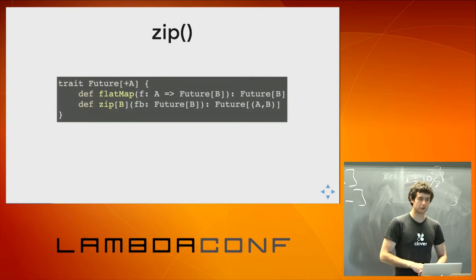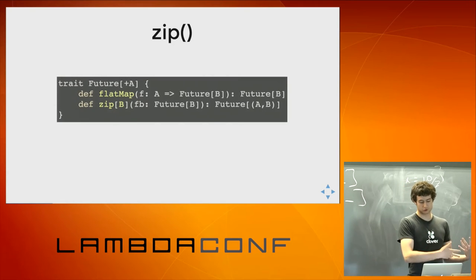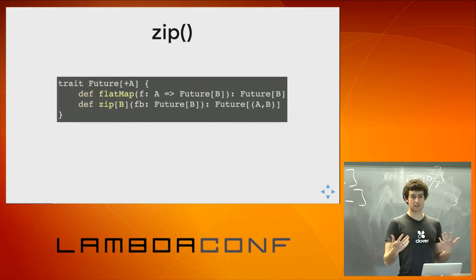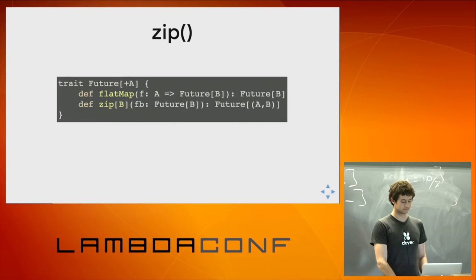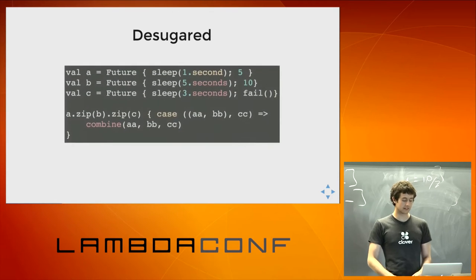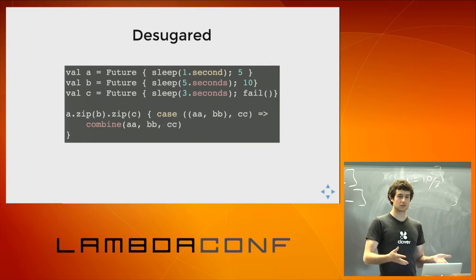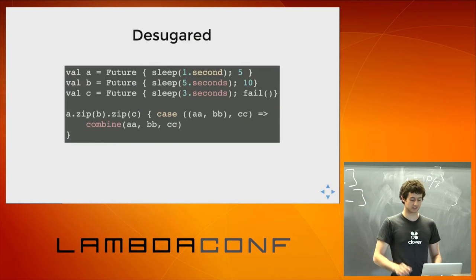If we look at another function — let's say zip — zip takes a Future of A and a Future of B and produces a Future of (A, B). In this case, we have access to Future of B, so it's possible for us to fail fast. We could rewrite the code we saw previously with zip, and now this behaves like we want it to. Well, actually in vanilla Scala it doesn't, but it could behave the way we want.